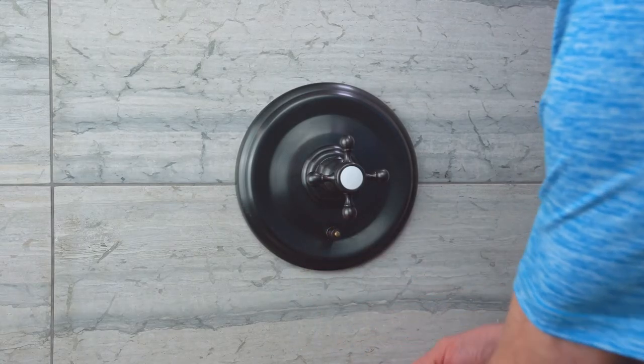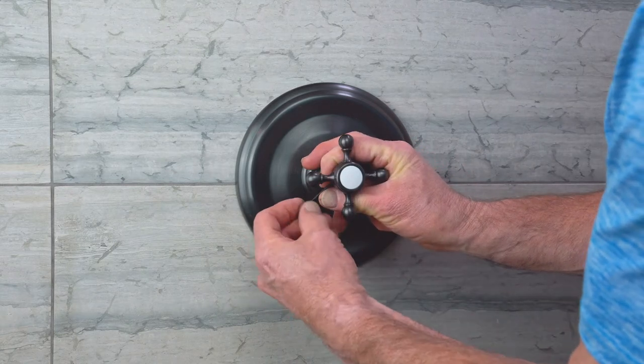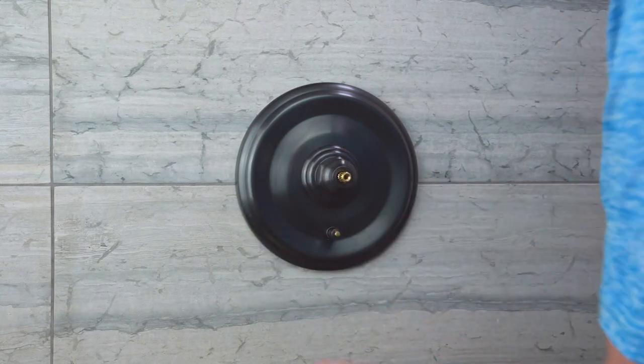Start by removing the diverter knob, the handle, hub, escutcheon, and faceplate.